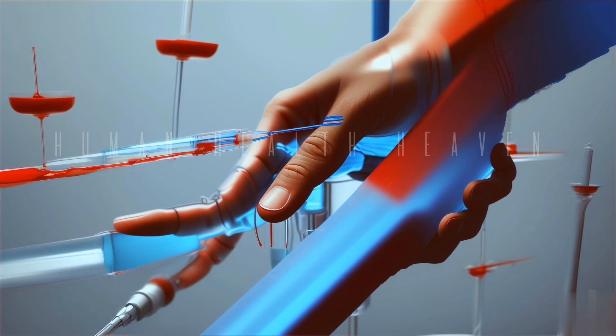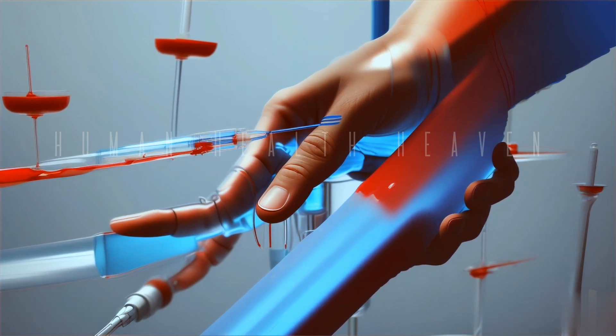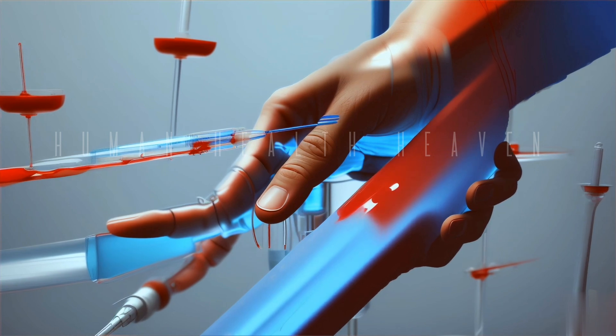Filtration: The spleen acts as a filter for the blood, removing old or damaged red blood cells.